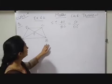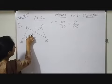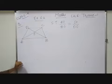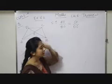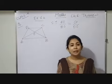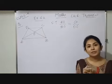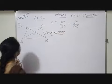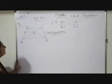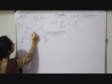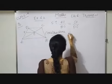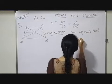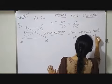Now observe this question. They have given a trapezium and we have to prove AO upon BO equals CO upon DO. Since I need a parallel line to apply the theorem, I am doing one construction: I will join point P such that OP parallel AB, and also OP parallel CD.